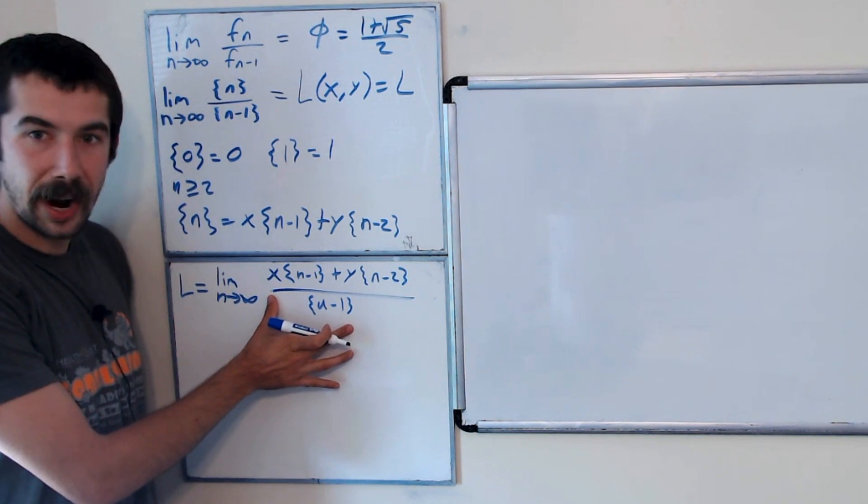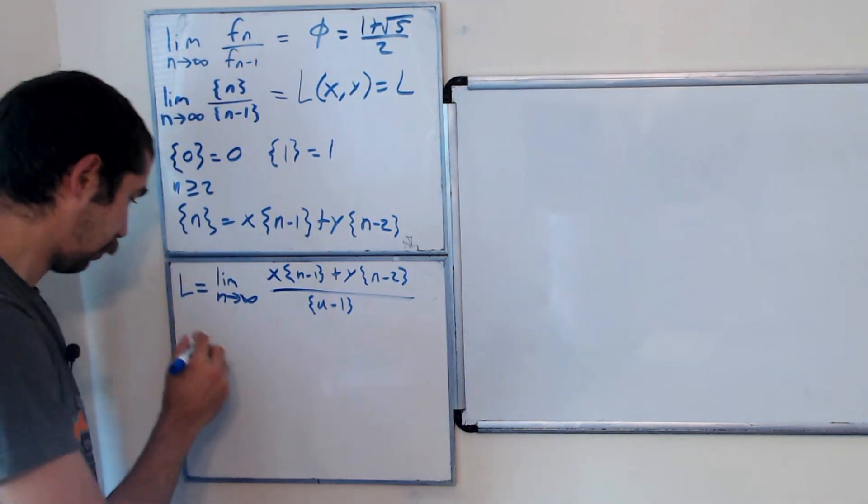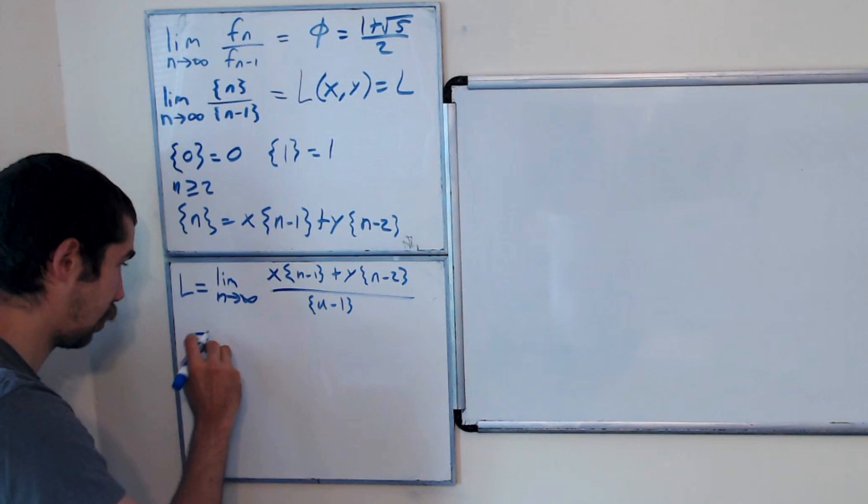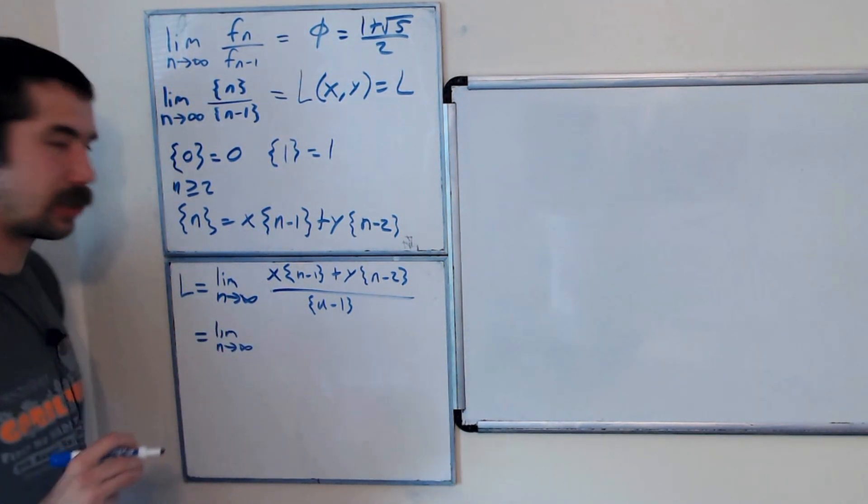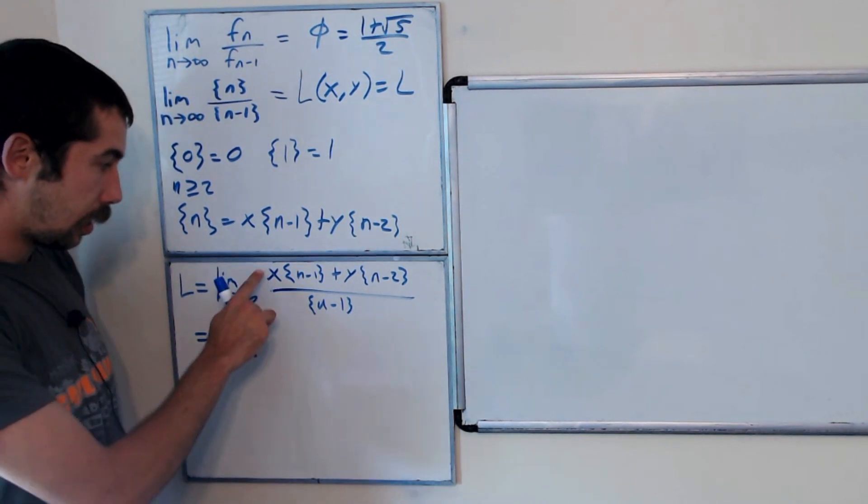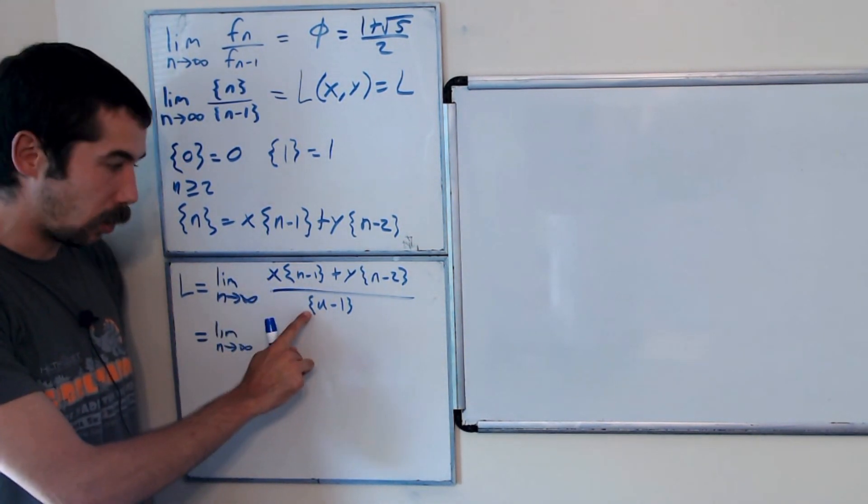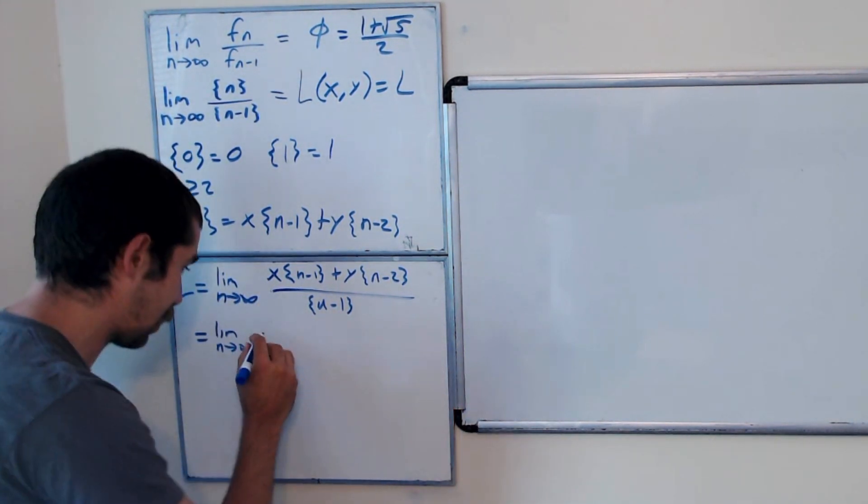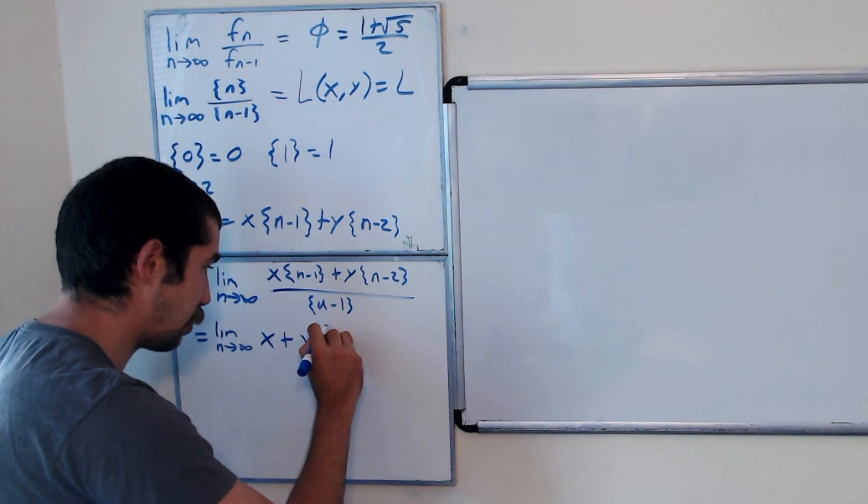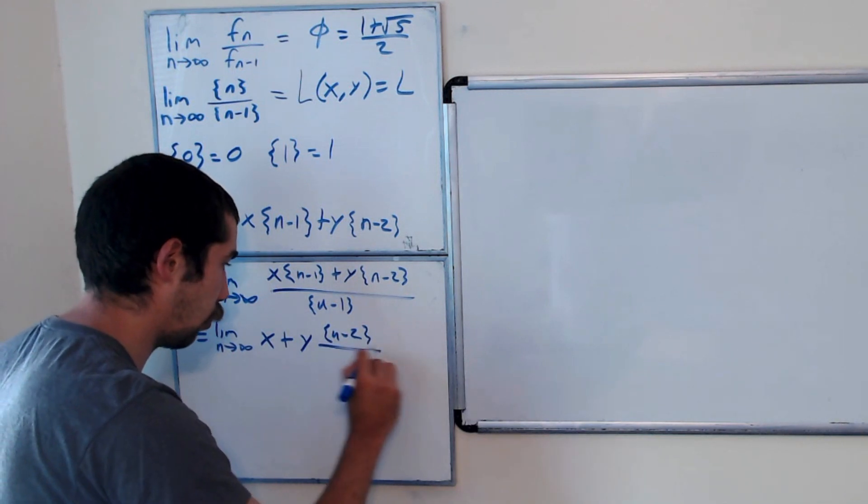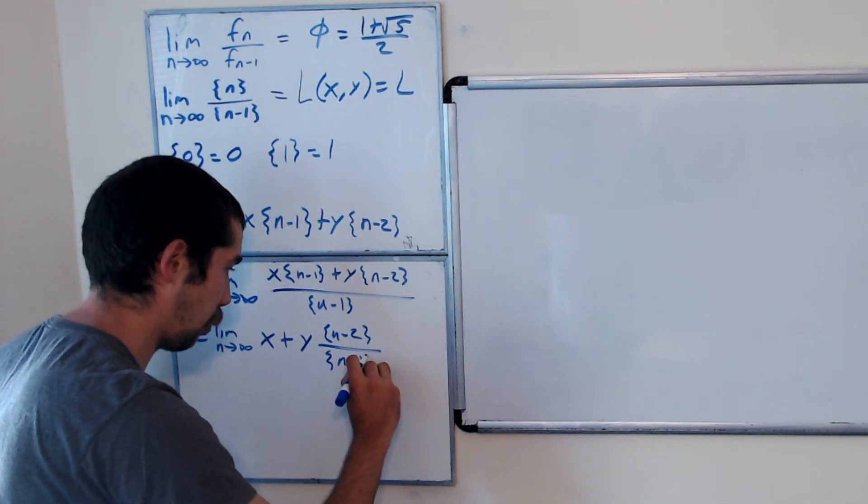And so we could take this fraction and break it up. So this is equal to the limit as n goes to infinity of x bracket n minus 1 over bracket n minus 1, that's just x, plus y times bracket n minus 2 over bracket n minus 1.